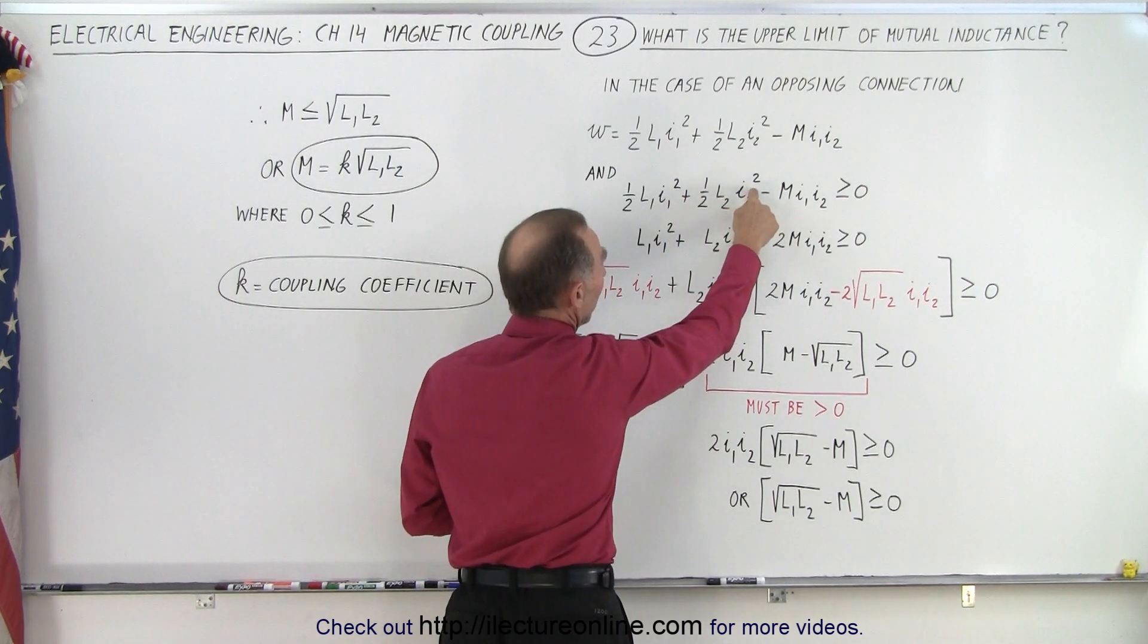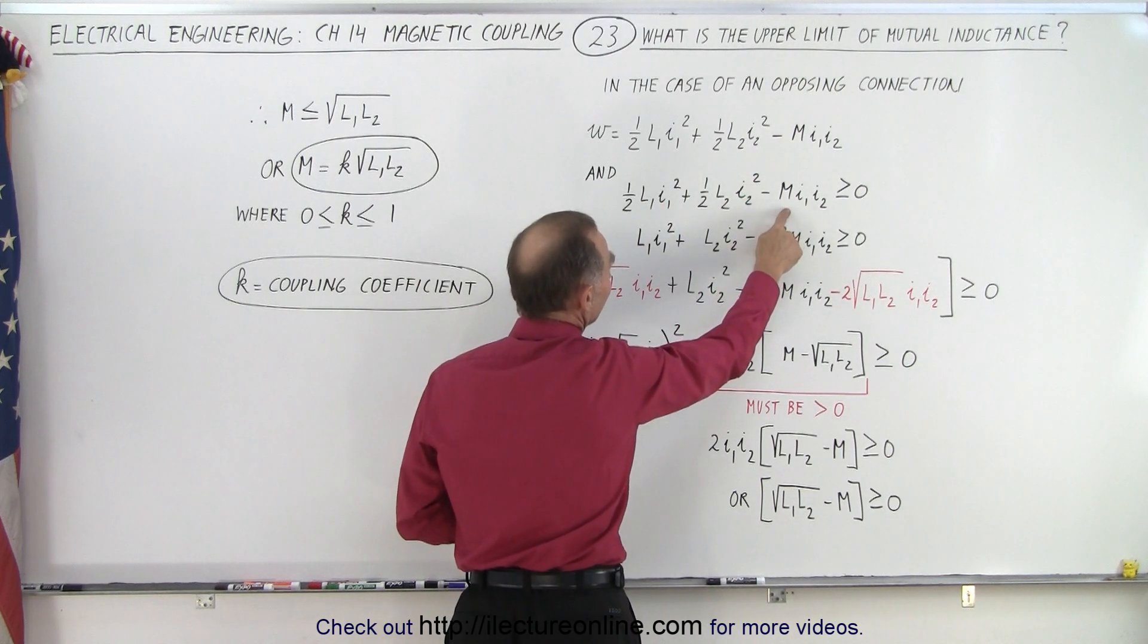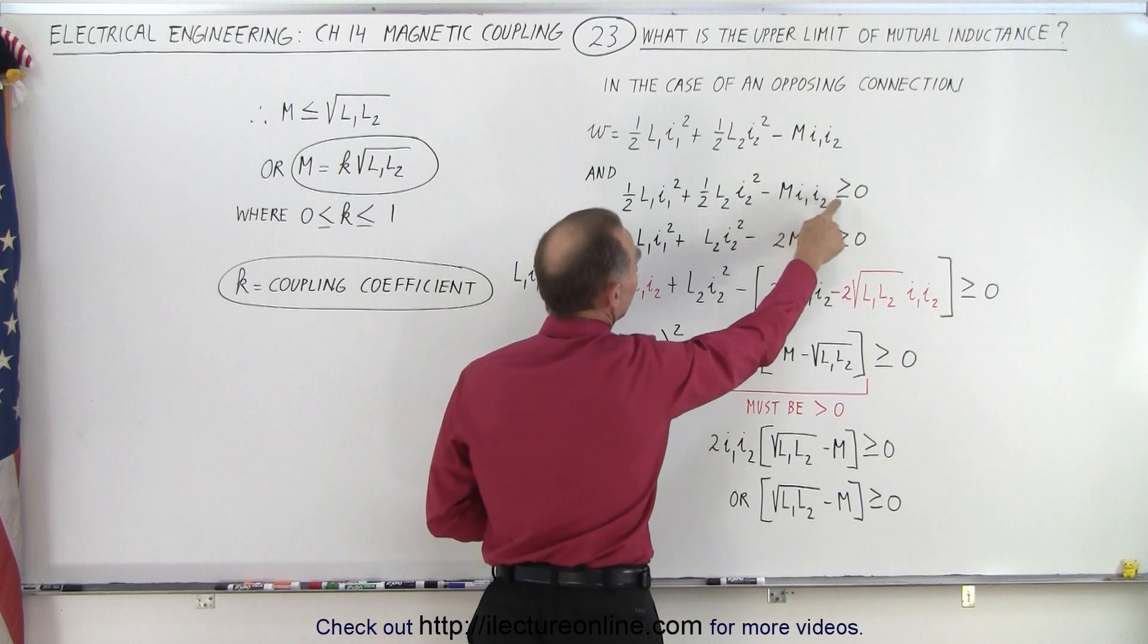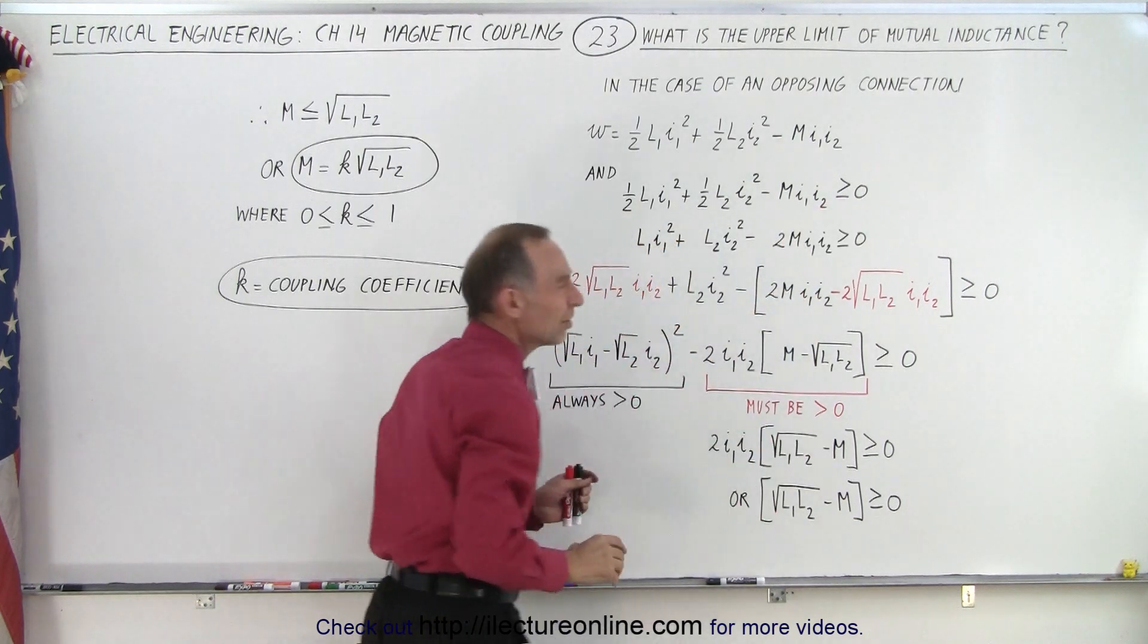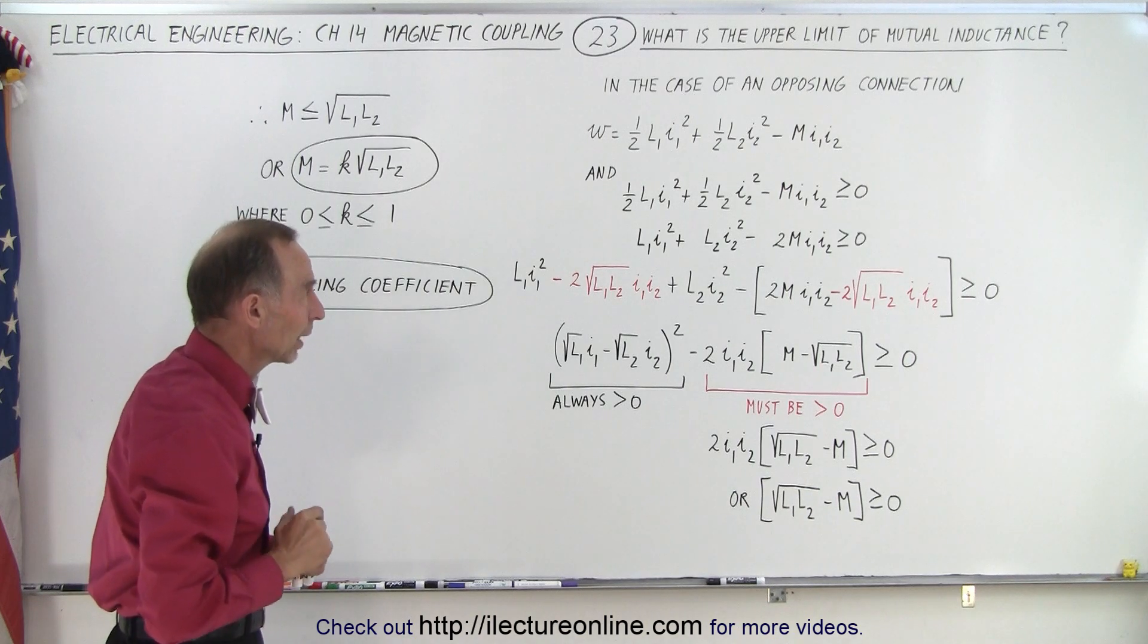Because we have the current squared so this is automatically going to be positive and that means that this would have to be bigger than zero. But that is not a good way to approach it. We can do a little bit better by doing the following.